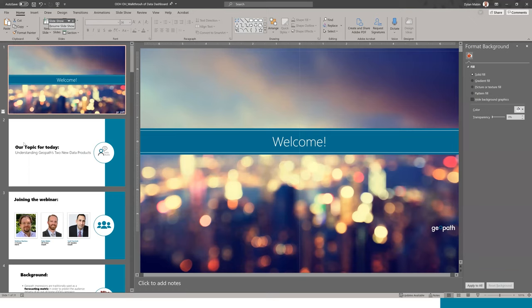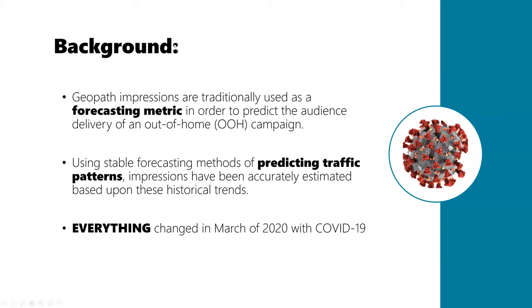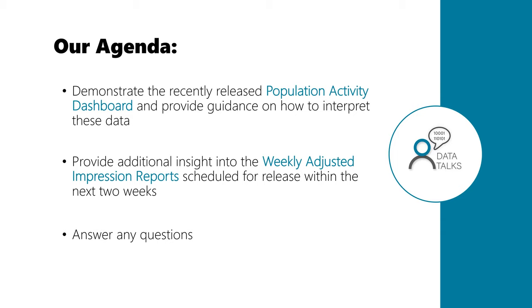Geopath impressions are traditionally used as a forecasting metric in order to predict audience delivery for an out-of-home campaign. To get that product, we use forecasting methods to predict traffic patterns, and these impressions have been estimated based on historical trends. But obviously everything changed in March of 2020 with COVID-19, and that made us re-examine what we were doing — and was the impetus for the two products we're going to talk about today.